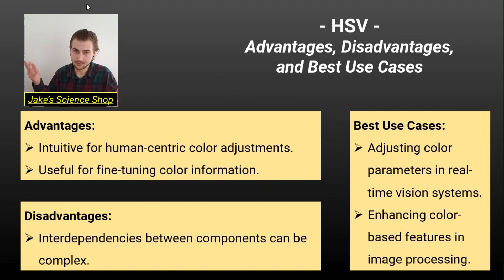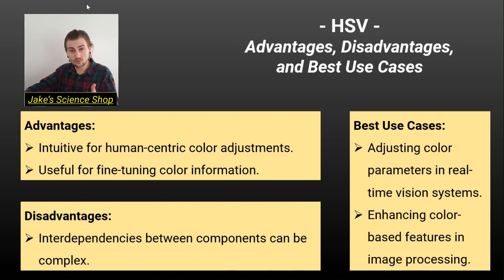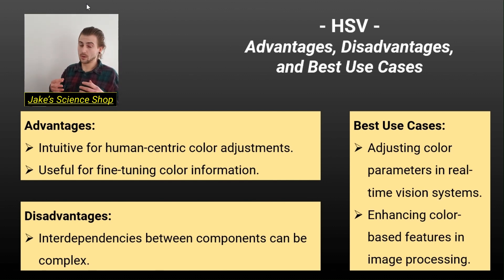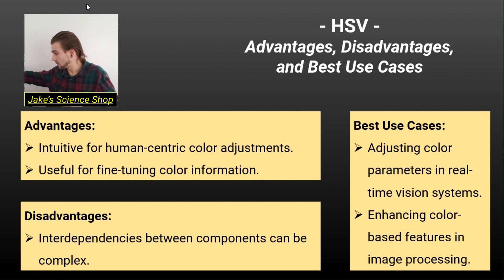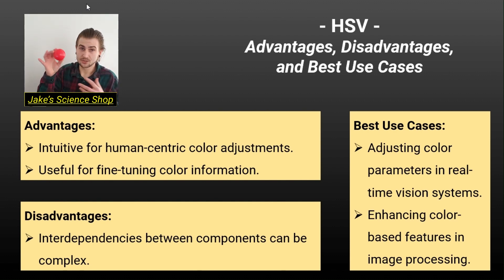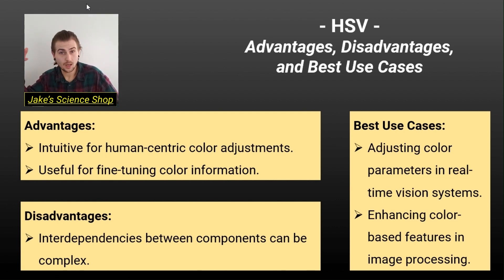It's also useful for fine-tuning of color information. When we move on to color detection, we'll want to get specific pixel colors or specific colored objects — such as this red bulb, which appears to reflect white but is actually a shade of red, as we discussed. As for disadvantages, it's quite complex — that's all that needs to be said about that.